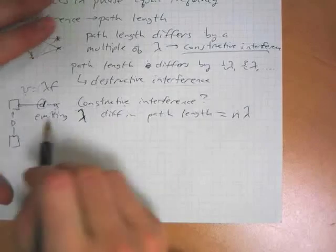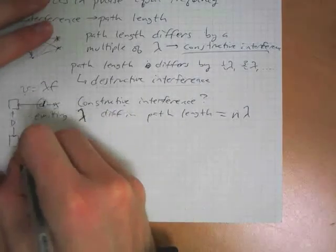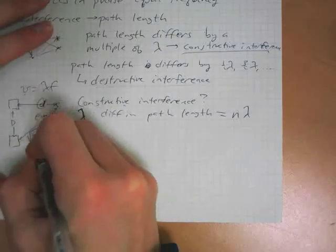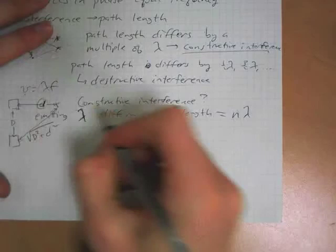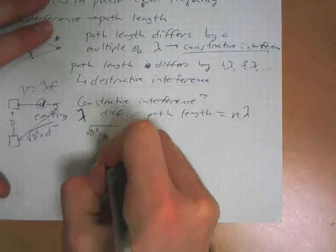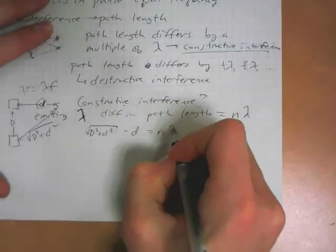So that is where our difference in path length, well, this is the hypotenuse of a right triangle, square root of big D squared plus little d squared. So, square root of big D squared plus little d squared minus d has to equal a multiple of the wavelength.